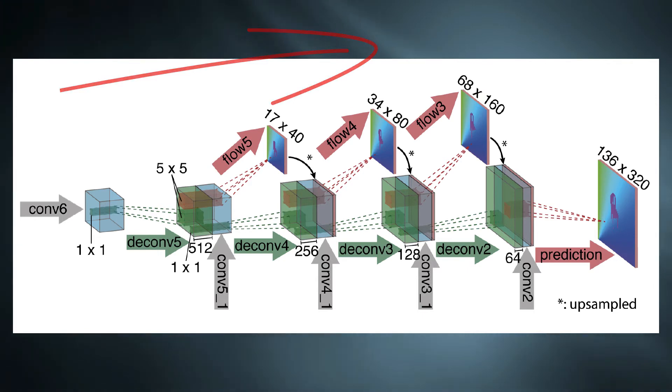The inputs of up convolutional layer are feature map from previous layer, feature map from corresponding contracting part and upsampled flow prediction from previous layer.